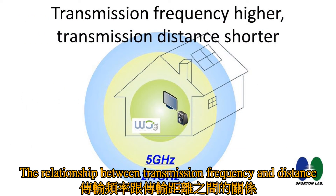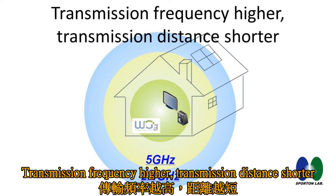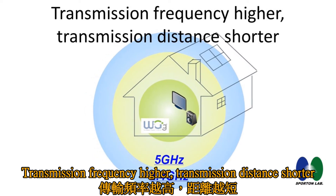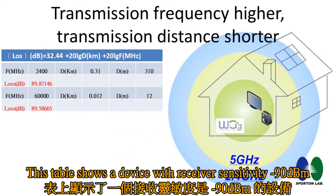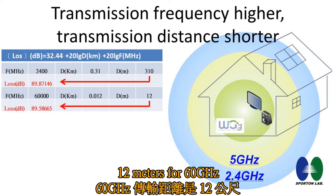The relationship between transmission frequency and distance: the higher the transmission frequency, the shorter the transmission distance. This table shows a device with receiver sensitivity at minus 90 dBm. For 2.4GHz, the transmission distance is 310m, and 12m for 60GHz.